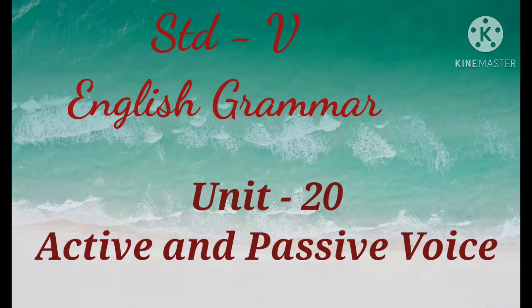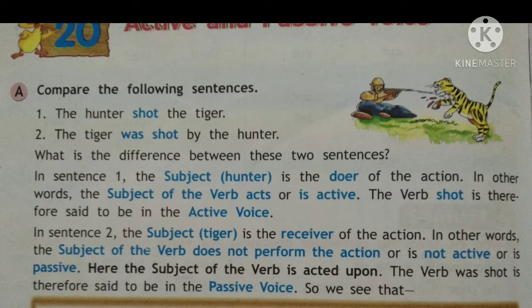Good morning, children. Let us begin with Standard 5, English Grammar, Unit 20, Active and Passive Voice. We know that a sentence is made up of a subject, verb, and object. The subject comes before the verb and the object comes after the verb. Let us read these sentences: the first is 'The hunter shot the tiger,' and the second is 'The tiger was shot by the hunter.'